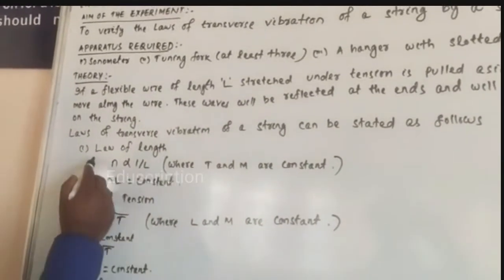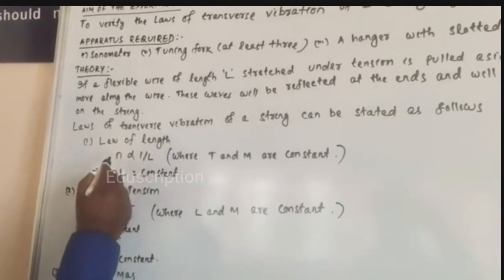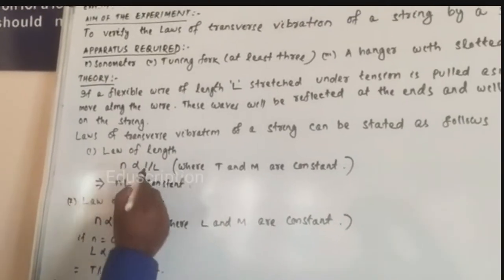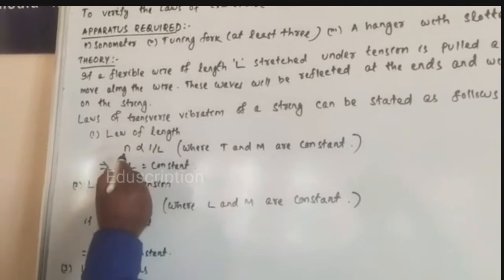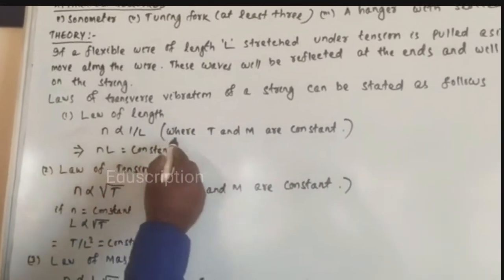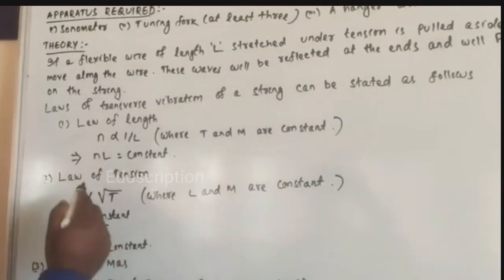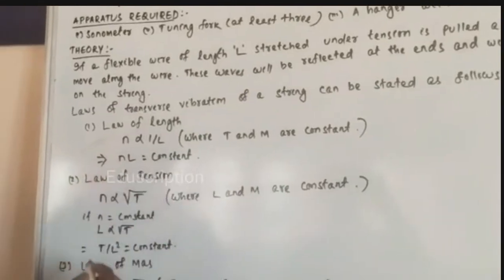First one is law of length: n is inversely proportional to L, that is written as n is proportional to 1 by L, where T and M are constant. That implies n into L equal to constant.